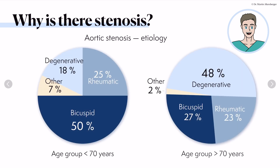The main problem of Greta appears to be aortic stenosis. The etiology differs by age group. People around or below 70 years very often have a bicuspid valve responsible for aortic stenosis; 25% have rheumatic causes and only 18% have degenerative aortic stenosis. In patients above 70 years, almost 50% have a degenerative cause — especially in high-income countries where degenerative aortic stenosis is very frequent, while bicuspid valve and rheumatic heart disease are less prevalent.